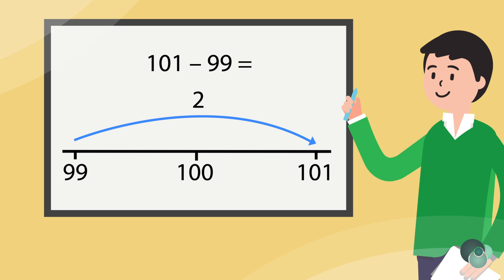Whereas for 101 minus 2, it's easier to think of that as 2 less than 101, 101 take away 2. So that decision making is really important in fluency.